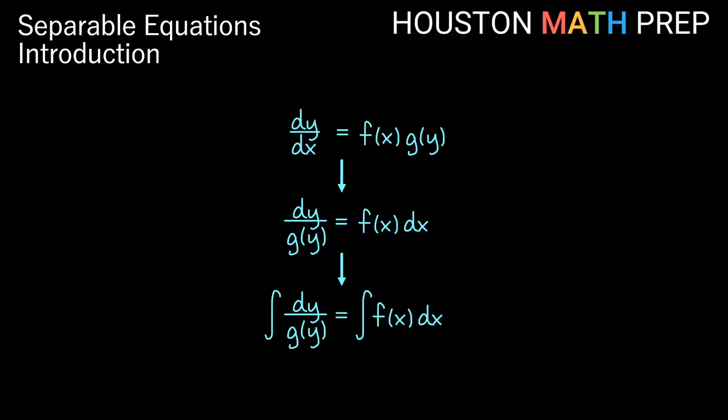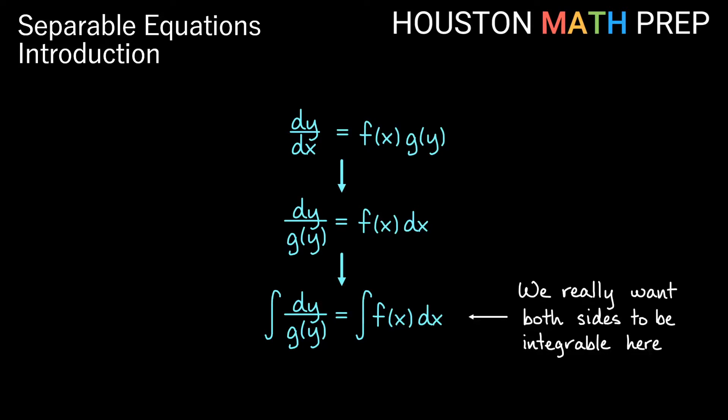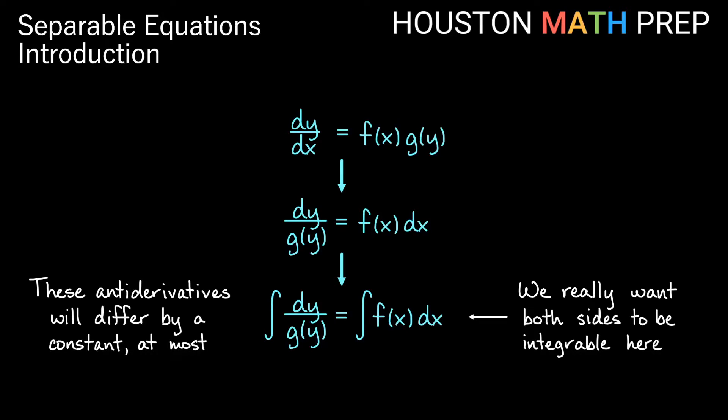Once that's confirmed, we integrate with respect to those variables on each side. We really hope that when we get to this point, each side of the equation is actually integrable — that we can compute the integral by hand. And one last thing to remember: these antiderivatives can be off from each other by, at most, a constant.